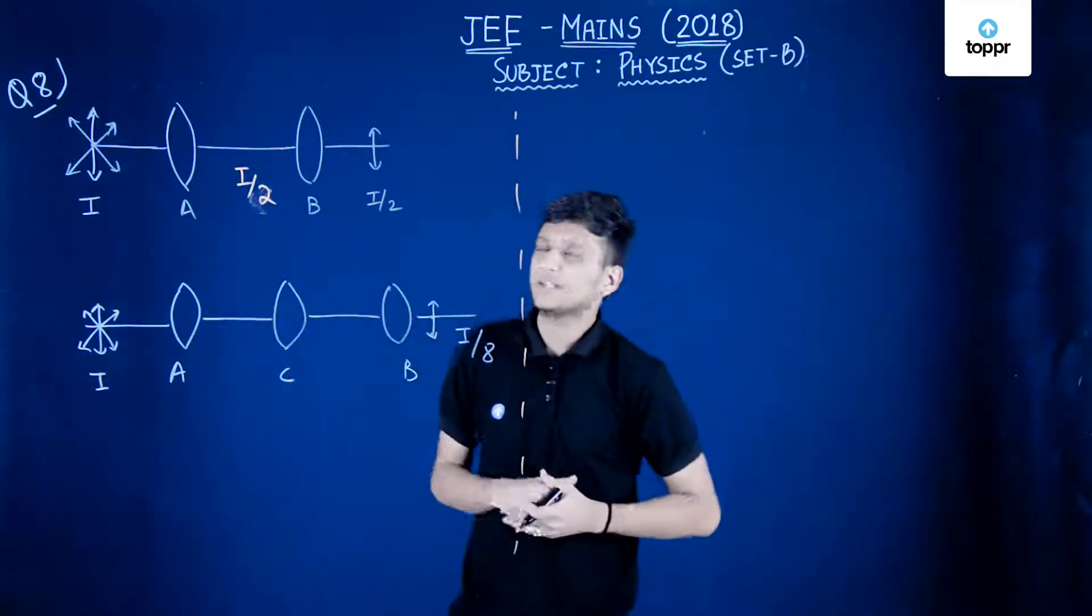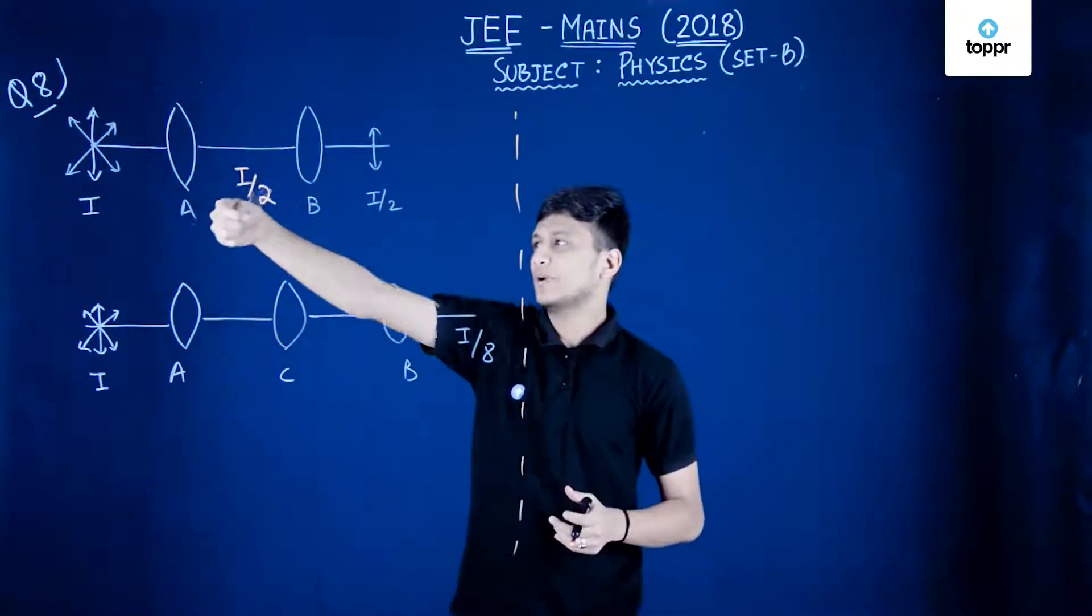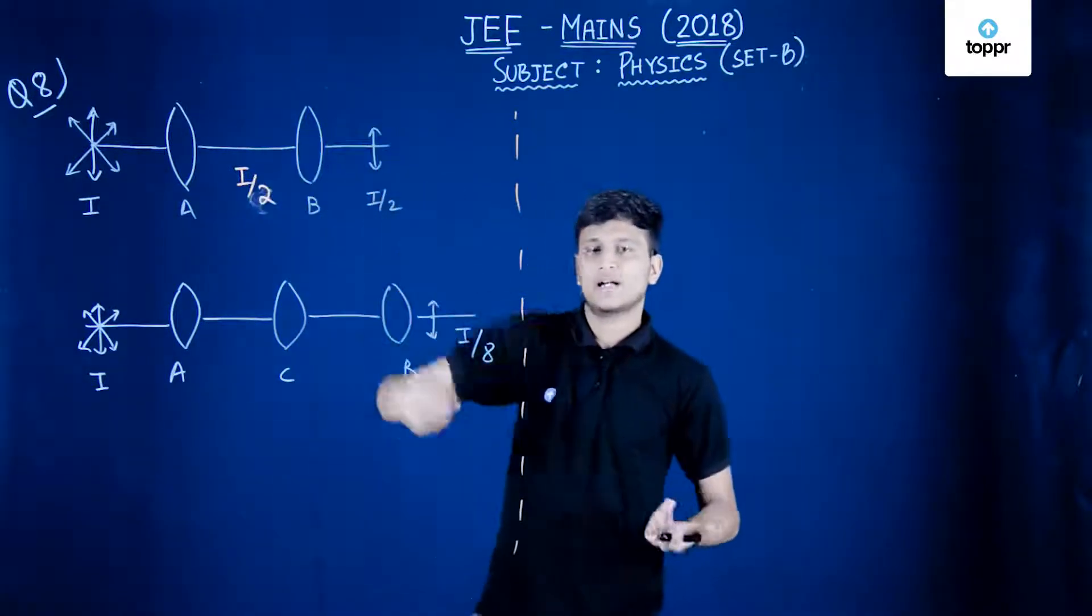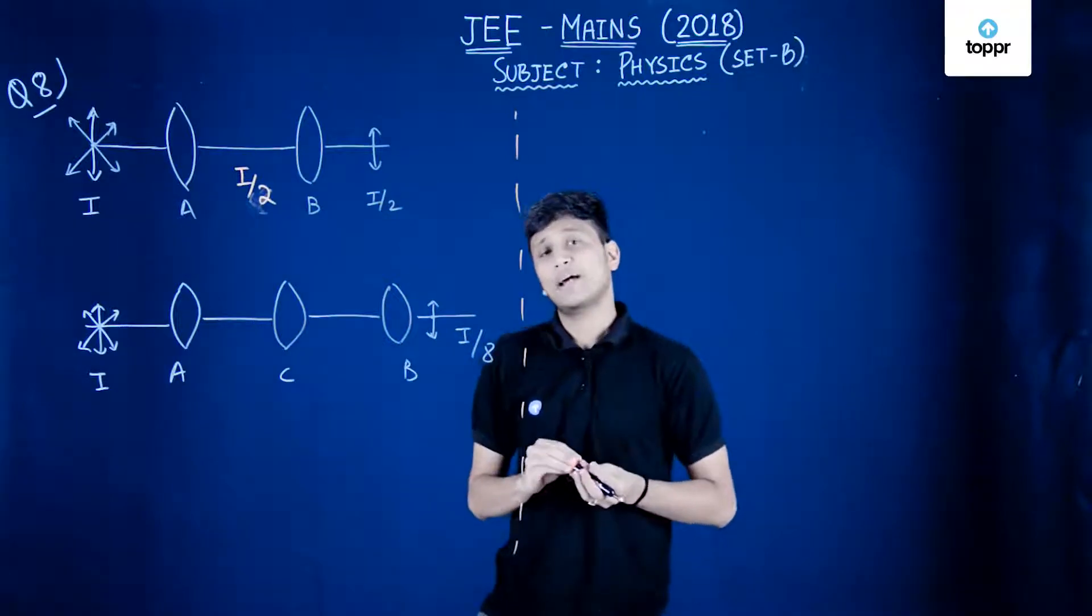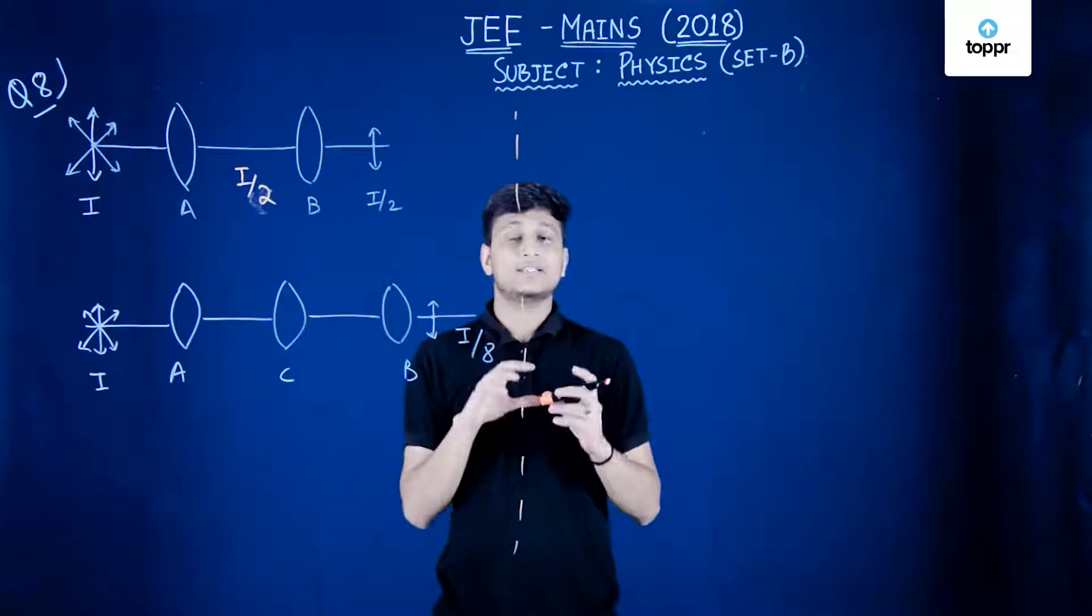Now what has been done here is from A to B its intensity remained same, I by 2 to again I by 2. Now we can apply a formula which is generally used when we talk about polarizers, this Malus formula.